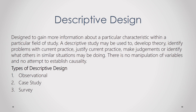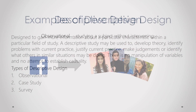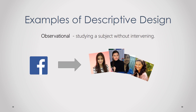Next is the descriptive design — designed to gain more information about a particular characteristic within a particular field of study. A descriptive study may be used to develop theory, identify problems with current practice, justify current practice, make judgments, or identify what others in similar situations may be doing. There is no manipulation of variables and no attempt to establish causality. There are three types: observational, case study, and survey.